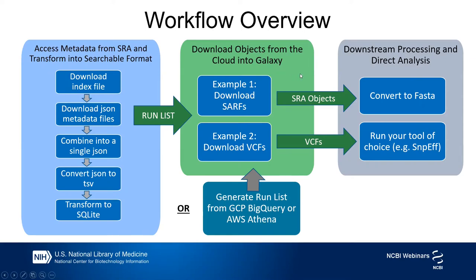Welcome to the walkthrough part of this tutorial. We're going to start with a quick schematic overview to get a general sense of what we'll be going through, and we'll refer back to this a couple of times during the tutorial to keep track of where we are in the process. The basics of what we're going to do today are: first, access the metadata from SRA, then transform it into a searchable format and run a search on it — that's this set of steps on the list.